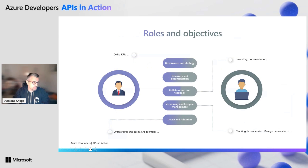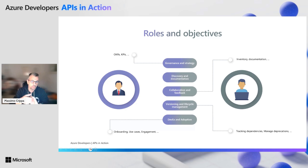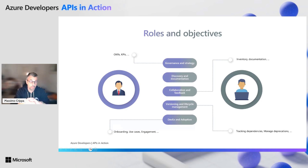Different roles come with different objectives. There are some objectives grouped with examples, but there are way more. Most of the time, those technical and business groups of people come together and create virtual teams to collaborate — on governance, on versioning and lifecycle, to manage deprecation, to understand which version has to be phased out and which version has to be promoted to which environment. What about developer experience? How to promote the adoption of your API and so on.